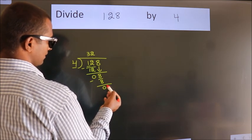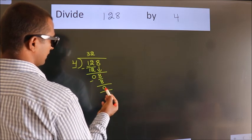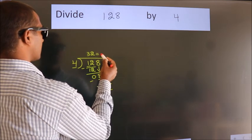After this, no more numbers to bring down. And we got remainder 0. So this is our quotient.